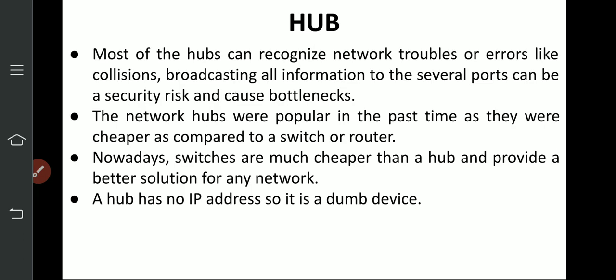Most hubs can recognize network trouble or errors like collision and broadcasting. Broadcasting all information to several ports can be a security risk and cause a bottleneck. The hub can recognize collision and traffic. When many senders are transmitting data at the same time, collision issues arise in the network.